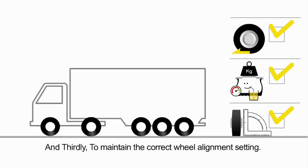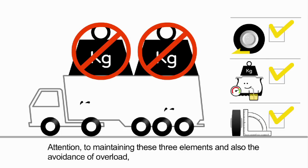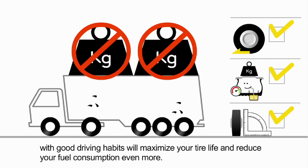Thirdly, to maintain the correct wheel alignment setting. Attention to maintaining these three elements, and also the avoidance of overload, with good driving habits will maximize your tire life and reduce your fuel consumption even more.